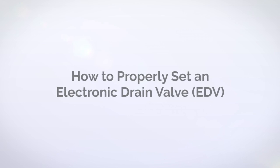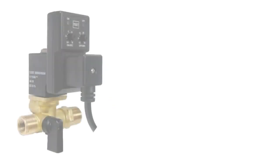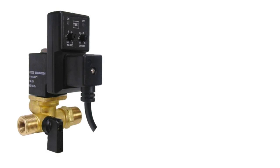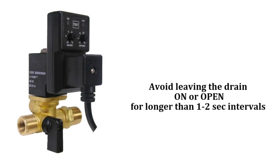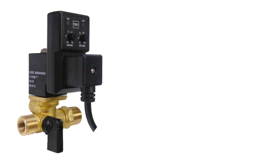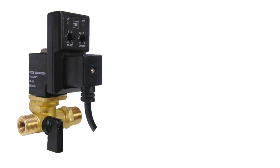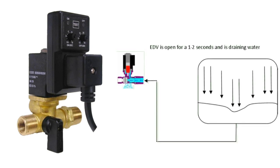One of the most common mistakes we see in pneumatics is improper setting of the timer control on the electronic drain valves, or EDVs. When setting your EDV, avoid leaving the drain valve on or open for longer than one to two second intervals. Remember, air will travel through the path of least resistance. If a drain valve remains open for longer than two seconds, air forces liquid to the side of the port, resulting in only a light mist being expelled from the EDV. Now the drain has become less effective, and the wasted purge creates a less efficient air system.